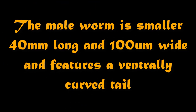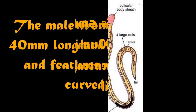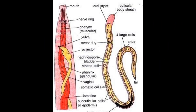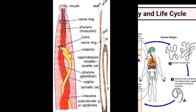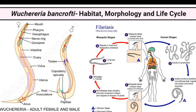The male worm is smaller — 40 mm (1.6 in) long and 100 micrometers (0.0039 in) wide — and features a ventrally curved tail. The tip of the tail has 15 pairs of minute caudal papillae, the sensory organs.